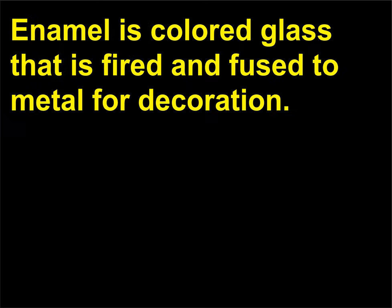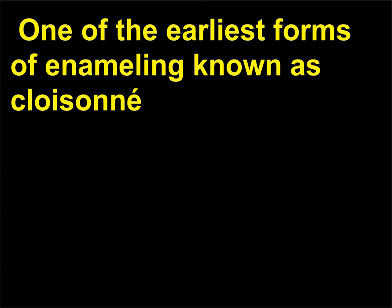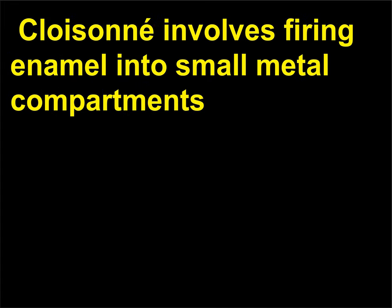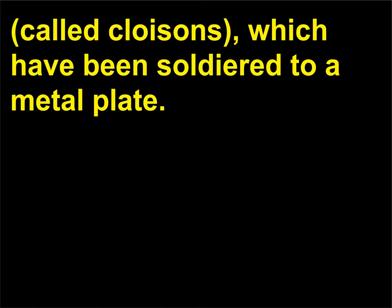What is enamel? Enamel is colored glass that is fired and fused to metal for decoration. One of the earliest forms of enameling, known as cloisonné, was popular in the Byzantine period and in medieval Europe. Cloisonné involves firing enamel into small metal compartments called cloisons, which have been soldered to a metal plate.